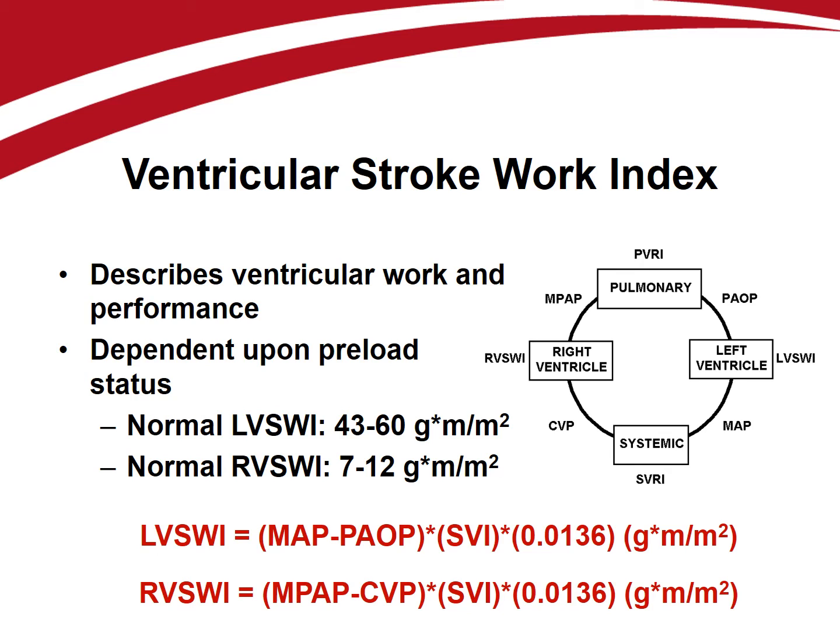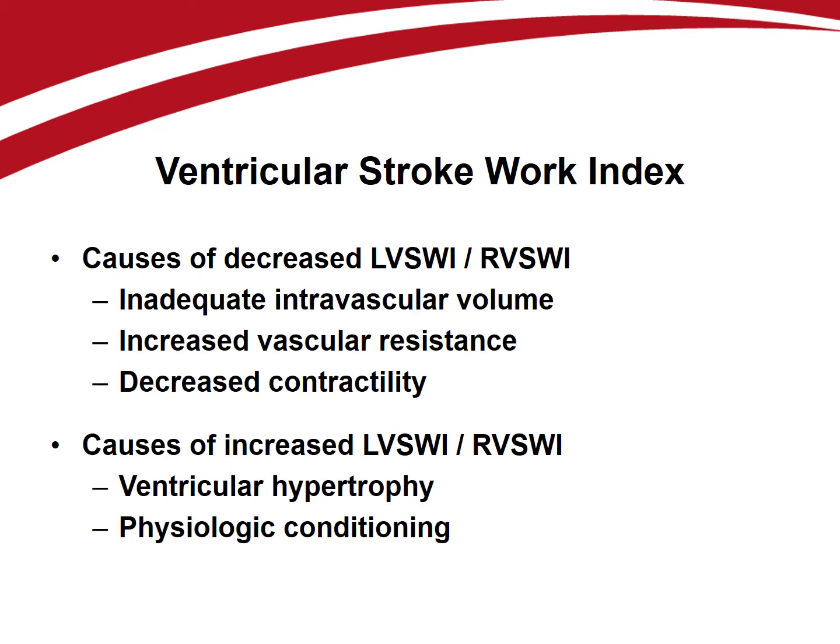A normal left ventricular stroke work index is 43 to 60 gram-meters per meter squared. For the right ventricular stroke work index, the equation is the same except that the pressure difference changes. The right ventricle doesn't generate much work, so this parameter is rarely calculated clinically. It's important to recognize that inadequate preload and a low stroke volume index will always mathematically result in a low stroke work index. To interpret stroke work indices properly, ensure the patient's preload status is optimized first. Causes of decreased ventricular stroke work indices include low intravascular volume, increased vascular resistance or afterload, and decreased cardiac contractility. Stroke work indices may be increased in the presence of ventricular hypertrophy and physiologic conditioning.